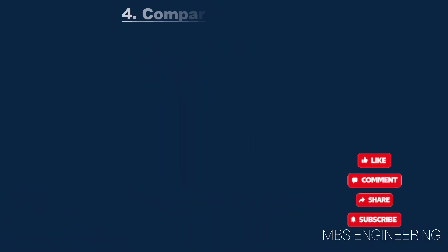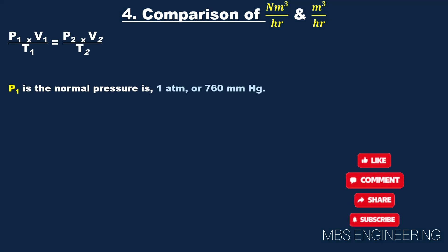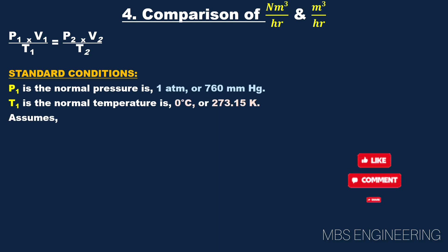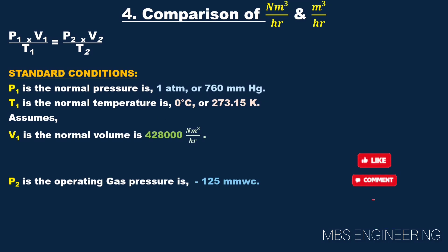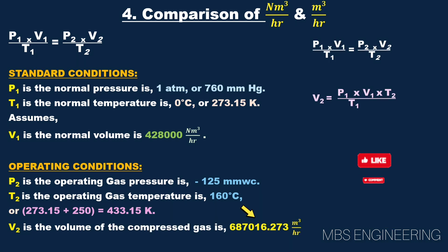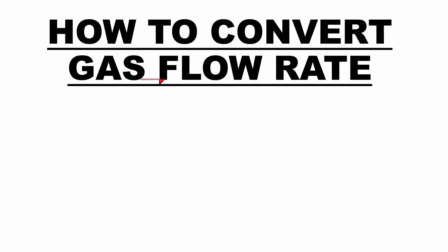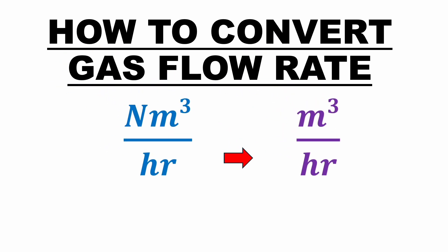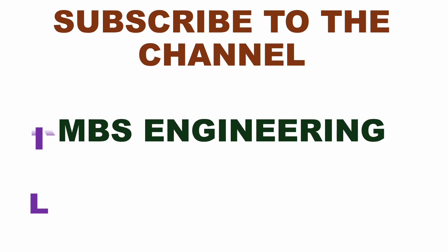We will now compare the standard and operating conditions. Based on the given data and calculations, the gas volumetric flow in standard conditions is 4,28,000 Nm³/hr. The gas volumetric flow in operating conditions is 6,87,016.273 m³/hr. When operating conditions change, including pressure and temperature, the obtained volumetric flow also changes. Thank you for watching. We hope everyone understands how to convert Nm³/hr to m³/hr. Don't forget to subscribe to the channel for more informative videos. Please like and leave a comment.